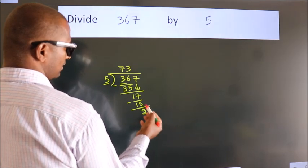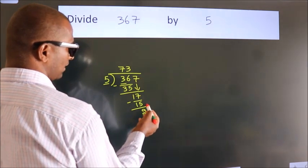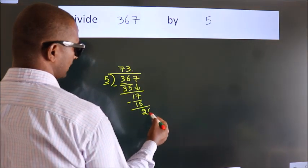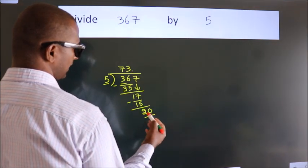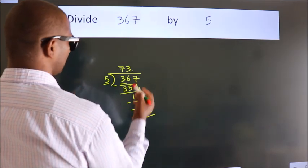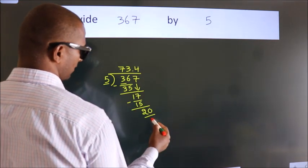After this, no more numbers to bring down. So what we do is we put a dot and take 0. So 20. When do we get 20 in the 5 table? 5 times 4 equals 20.